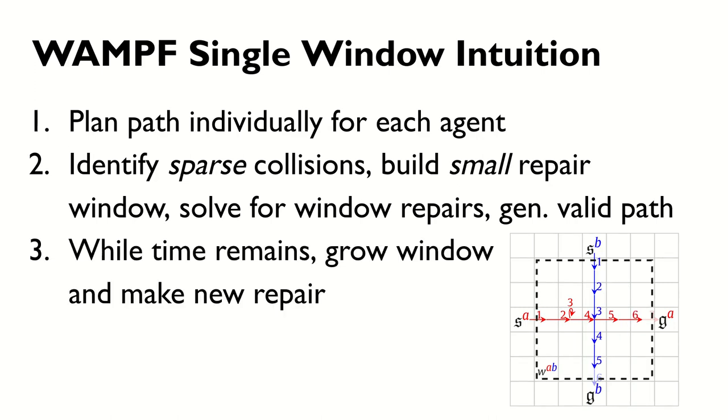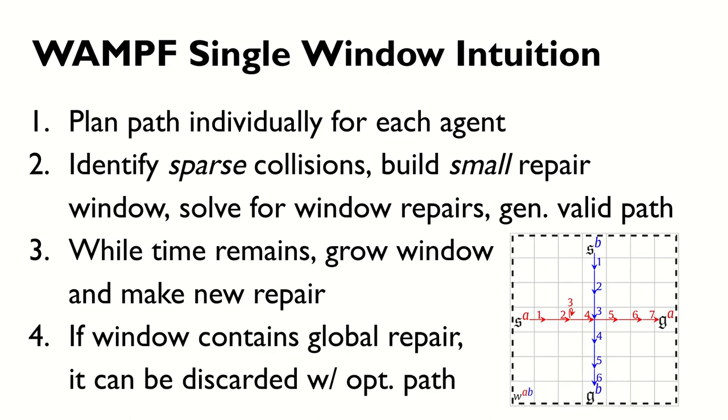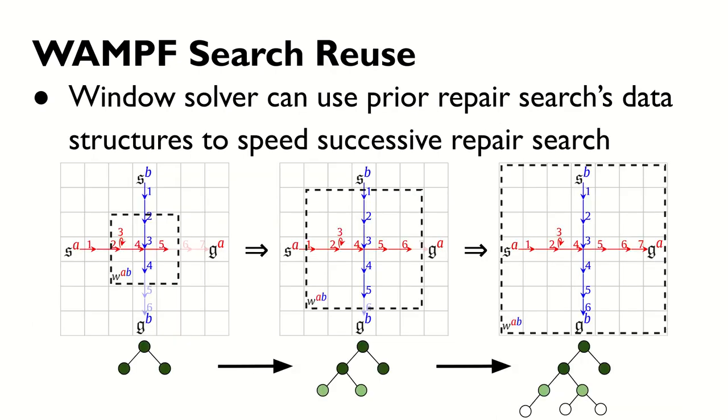While time permits, the window can be grown and a new, larger repair generated. The resulting global path is likely to be less suboptimal, but the repair takes more time to generate due to searching a larger area. Eventually, the window will grow large enough to encapsulate the entire problem of its subset of agents, and the window can then be discarded as it has generated an optimal, collision-free global path for the agents involved. Additionally, a major goal of WAMPF is to allow for efficient successive path generation by allowing for repair search reuse. WAMPF works to preserve windows over multiple iterations, allowing data structures from prior searches to be reused, resulting in significant speedups.